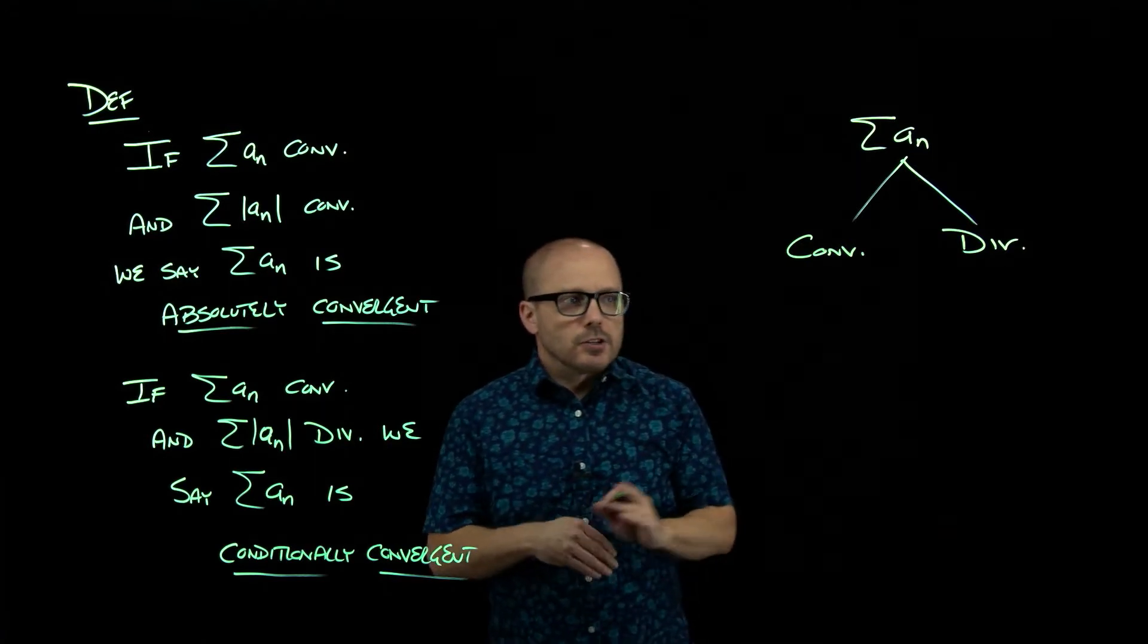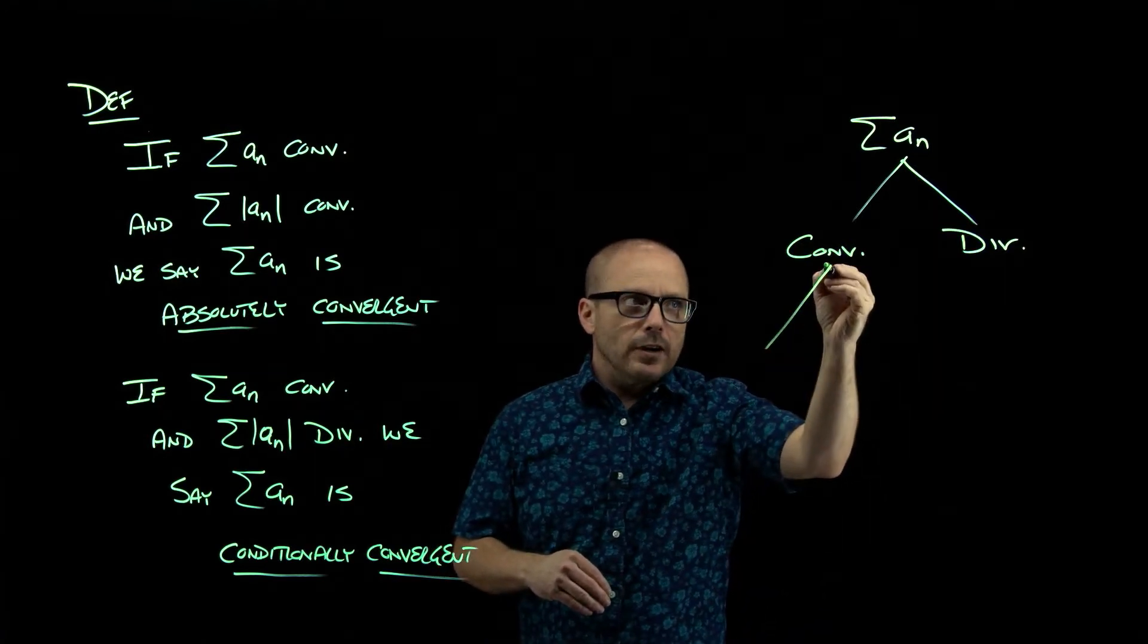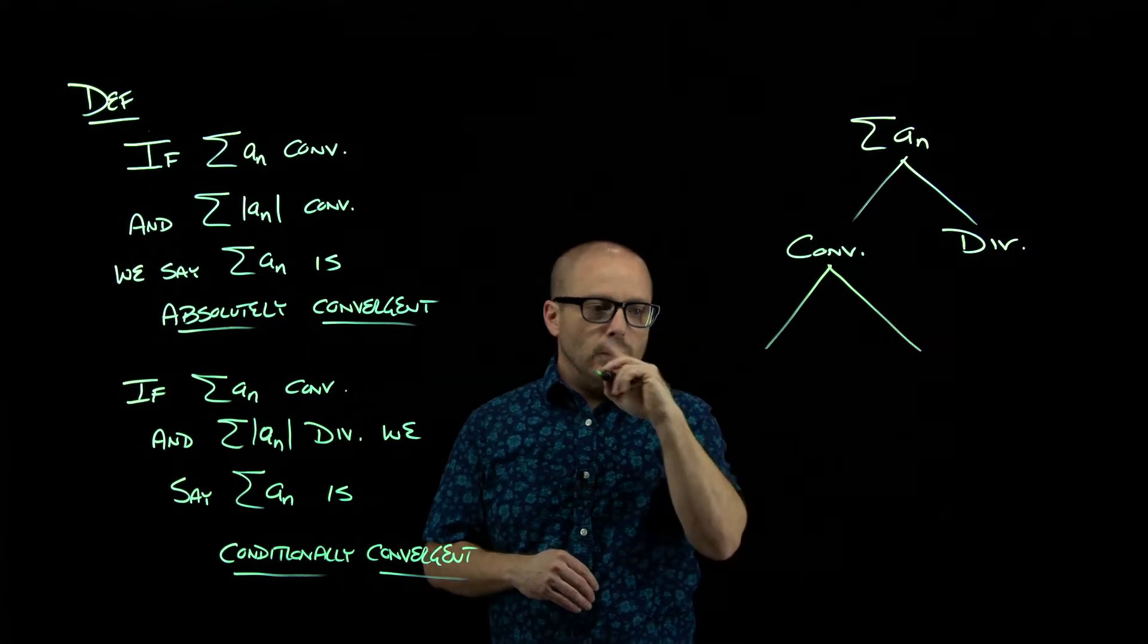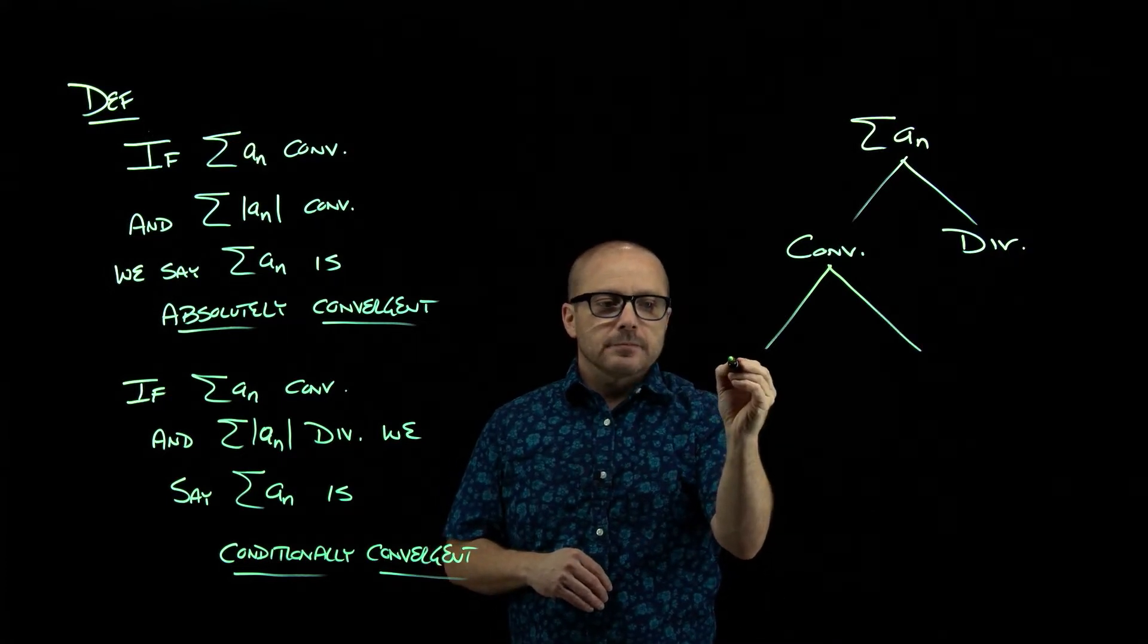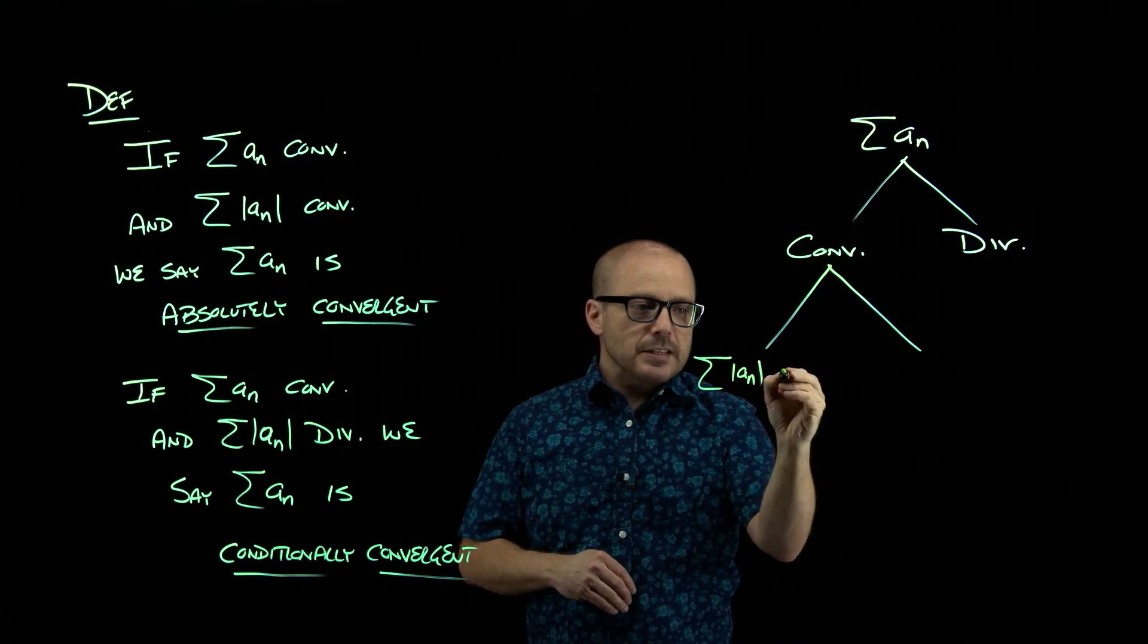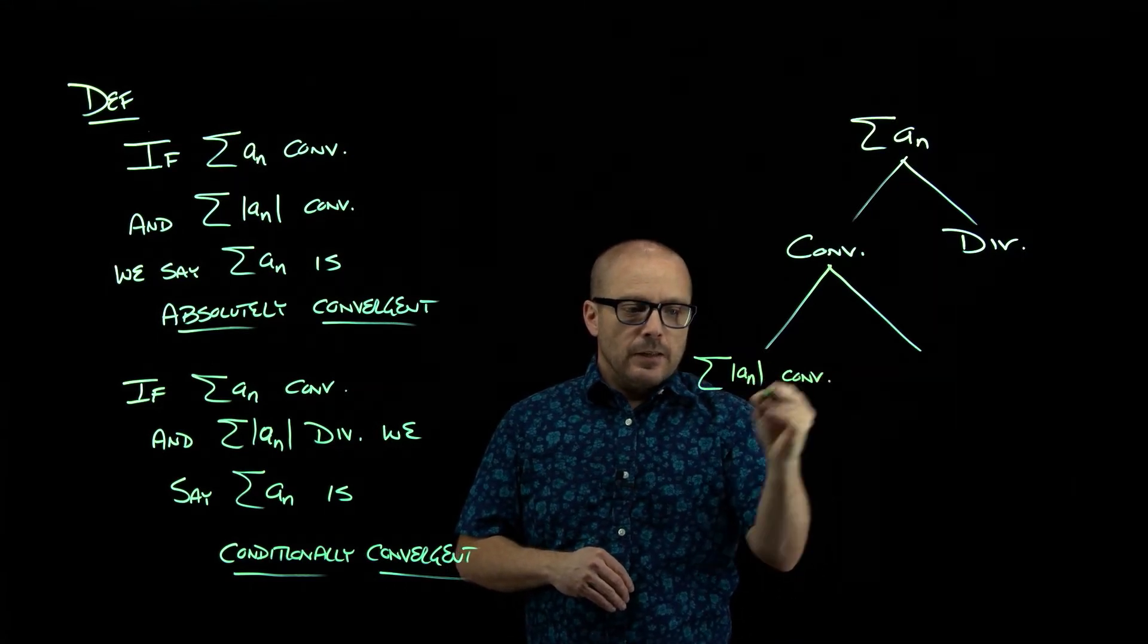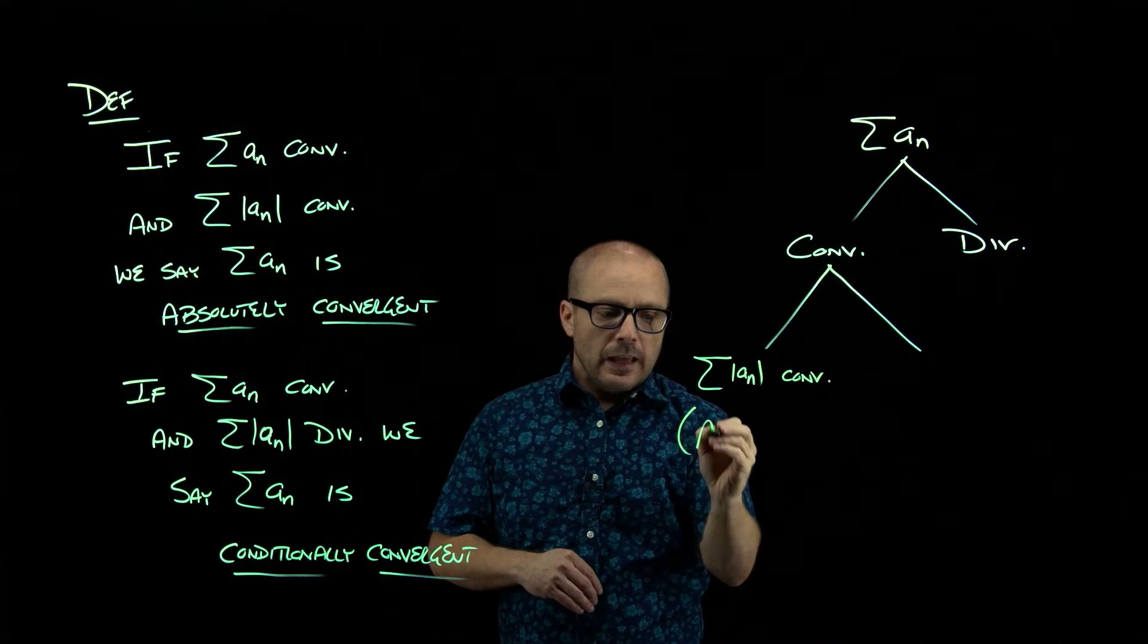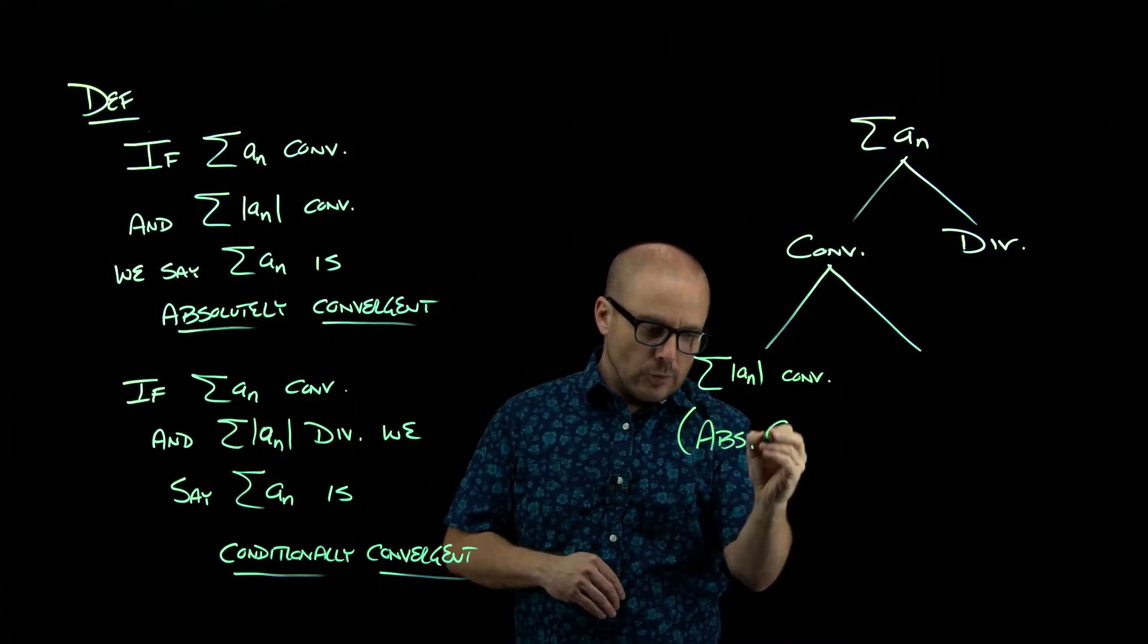But now if you are convergent, we subcategorize that into if the absolute value of the terms, if that series converges, then we call this absolute convergence.